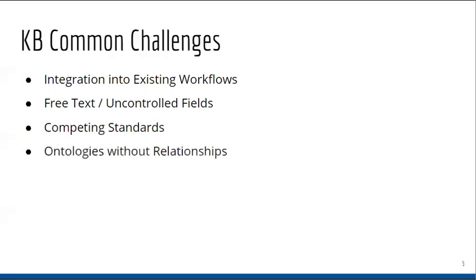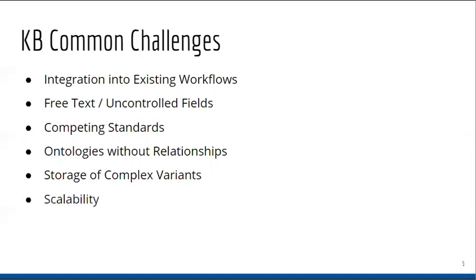There are many competing standards amongst the various knowledge bases. And while most knowledge bases leverage ontologies as controlled vocabulary, few store the relationships along with the terms. This means that end users must obtain the ontology themselves if they wish to leverage it in tools interacting with the knowledge base. Complex variants are often an afterthought, and support for variants like structural variants or molecular signatures are not given the same priority and level of detail in their data structure as simpler counterparts like single nucleotide variants. Finally, scalability is always an issue.